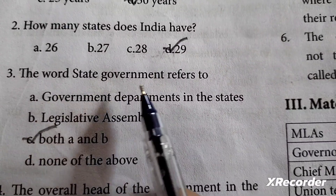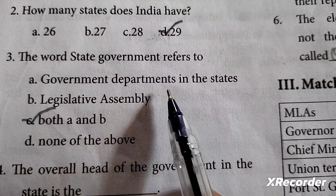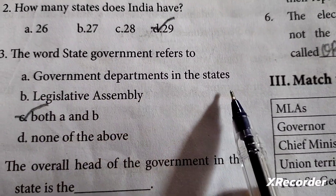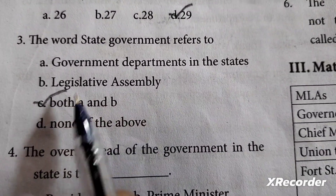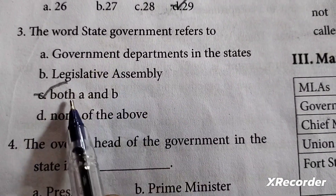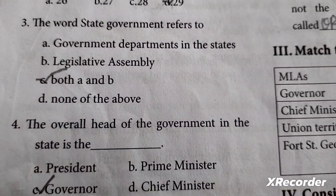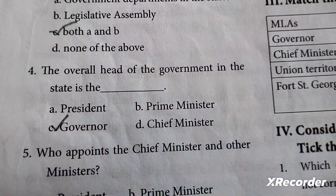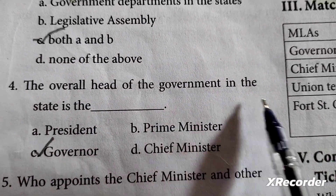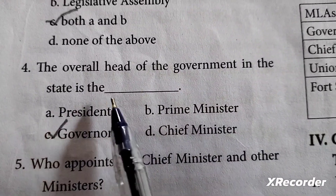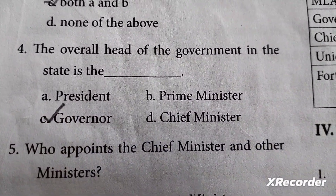Third question: The word 'state government' refers to — A. Government departments in the states, B. Legislative assembly. The correct answer is Both A and B. Fourth question: The overall head of the government in the state is the Governor. The answer is C.